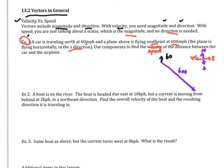The velocity vector for the car is going to be: well, it's going straight up in the j direction, so it's 0i + 60j + 0k. That's our vector — the car is not moving up and down, only north.